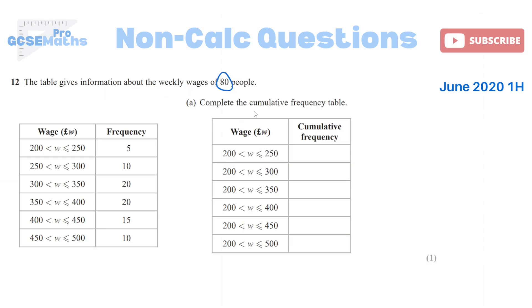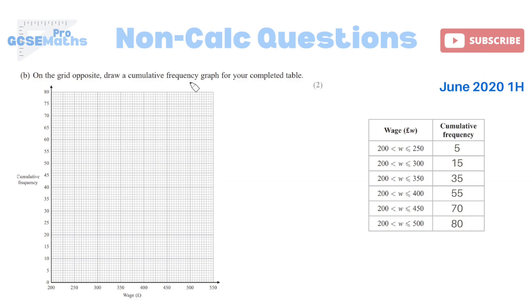The table gives information about the weekly wages of 80 people. First, complete the cumulative frequency table: the first row stays at 5, then add 10 to get 15, add 20 to get 35, add 20 to get 55, add 15 to get 70, and the final 10 makes 80. Your final row should equal the total given in the question. Then draw the information on the graph — plot on the x-axis the right-hand side of each range, so the first point is at 250 along and 5 up. Continue: 300 along at 15, 350 along at 35, and so on. Your cumulative frequency graph values should always be increasing — if not, something has gone wrong. Join the points with a smooth curve.